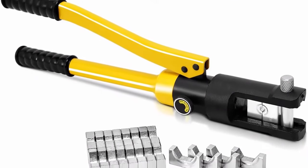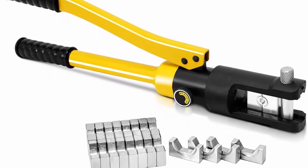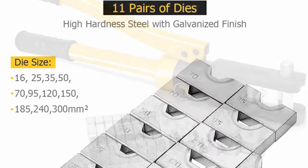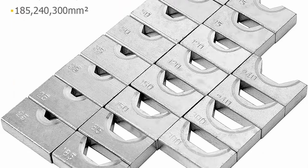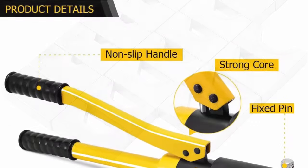Wide application - it is equipped with 11 sets of crimping dies and its head can be rotated 180 degrees freely for narrow space working. A good choice for battery and welding cables, power wires, and electrical cables.